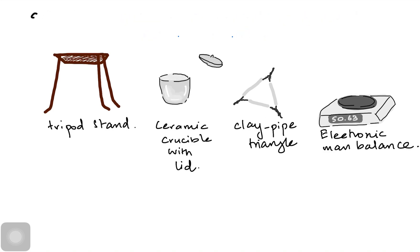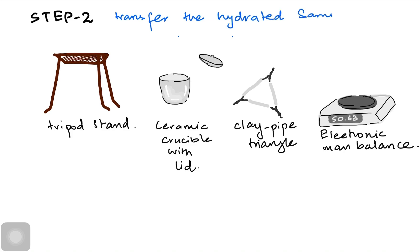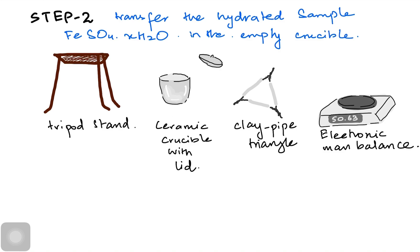In step 2, we remove the lid and add our sample into the crucible. We transfer the hydrated sample, FeSO4·XH2O, inside the empty crucible. Obviously, the mass has increased by now.